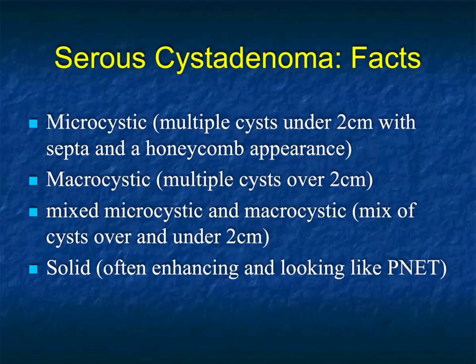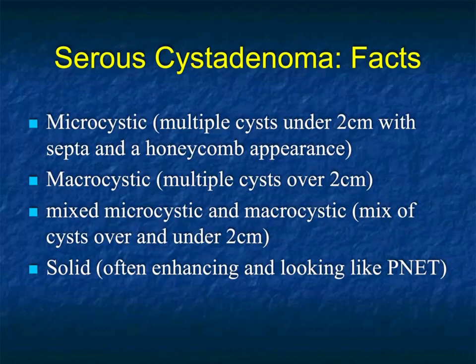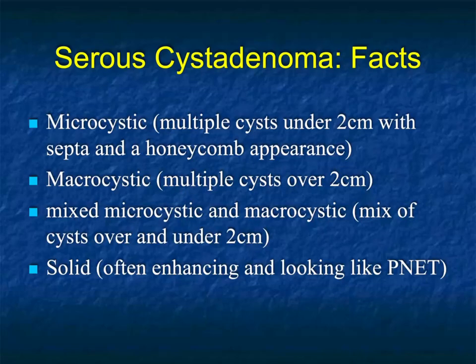Serous cystadenomas are typically broken into four categories: the microcystic, which is the classic one with multiple cysts under two centimeters with septations and that honeycomb appearance; macrocystic, where there are multiple cysts over two centimeters, which can be more challenging; mixed micro and macrocystic, where some cysts are small and some are larger; and oligocystic, where it's just one big cystic lesion. The least common is where lesions are solid and look essentially identical to neuroendocrine tumors - those are probably the hardest to diagnose.